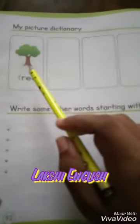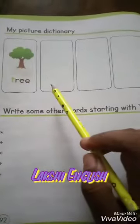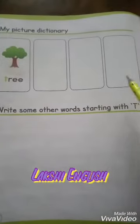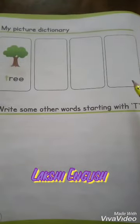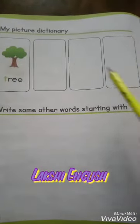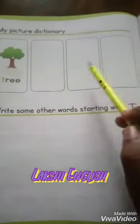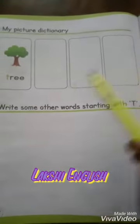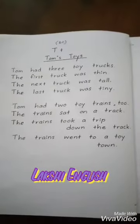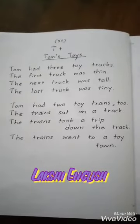Then you have to write another three words starting with T, then draw the pictures. Write some other words starting with capital T — you can get words from here.